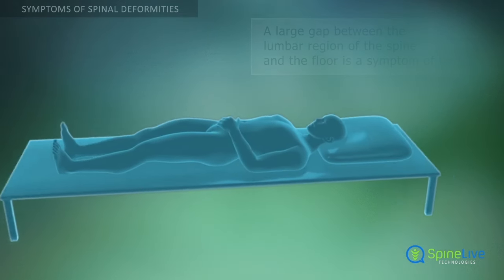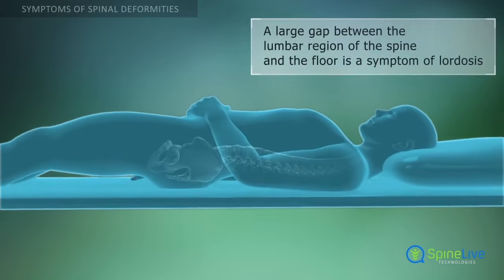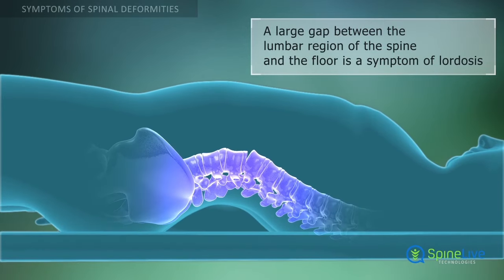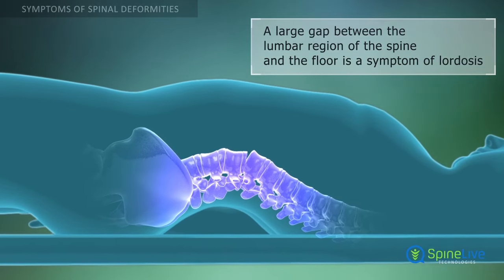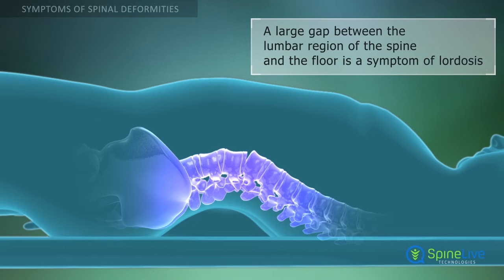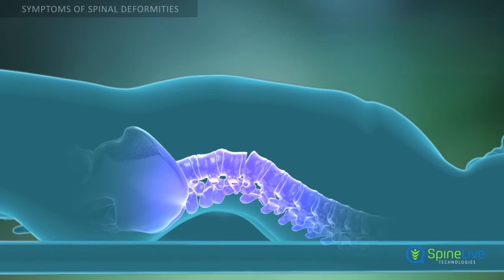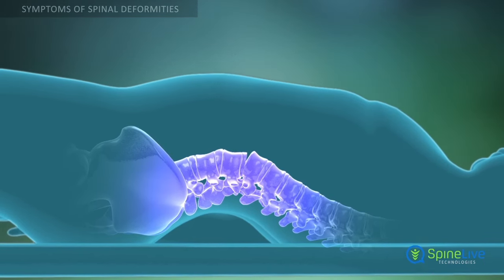In lordosis, a large gap occurs between the lumbar region of the spine and the floor when you lie on your back. It results in chronic pain and tightness in the back.